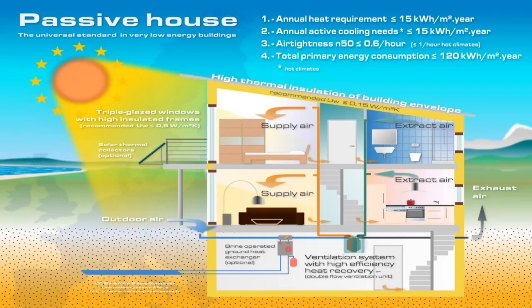Next we have the passive solar house, which is another interesting application of solar thermal energy. It aims at building an energy-efficient house which utilizes the sun's heat energy for space heating and space cooling. It is basically an architectural design idea but is another important application of solar thermal energy. Next we have a short video which explains the same.